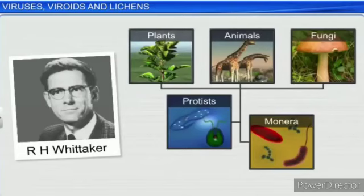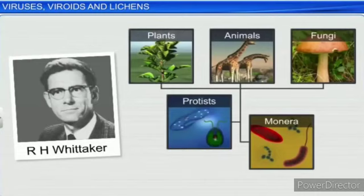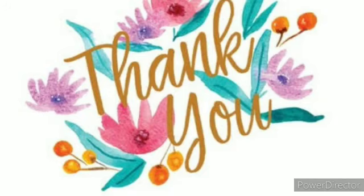We have now completed the biological classification chapter, specifically the 5-kingdom classification proposed by R.H. Whittaker. Three organisms not included in this classification are viruses, viroids, and lichens. Thank you.